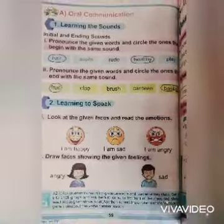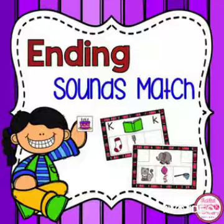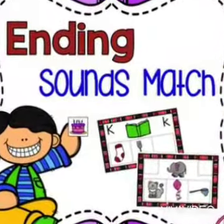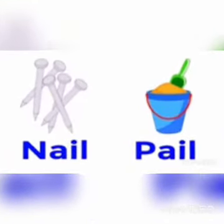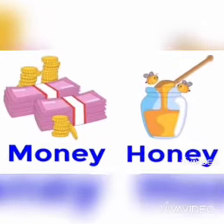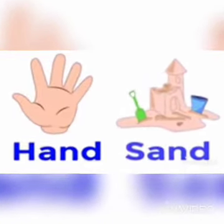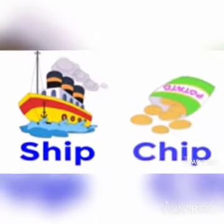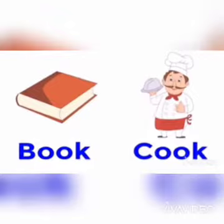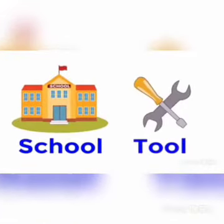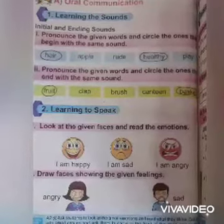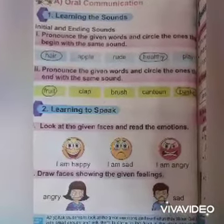To practice the ending sounds: wing, ring, nail, bill, money, honey, hand, sand, ship, chip, book, cook, duck, truck, jet, net, and the last one — school, tool. We look at the last letter sounds in the ending sounds. 'L, l' — learning to speak.